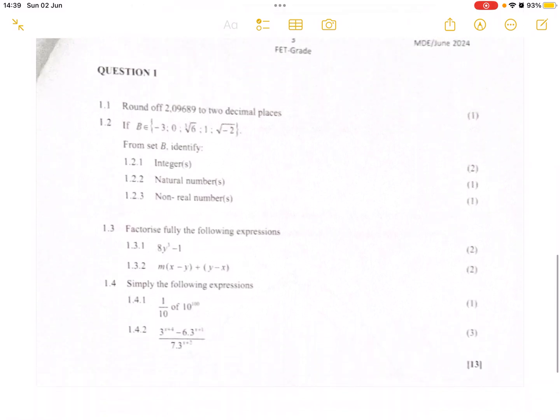In today's episode, we are going to look at the Mpumalanga grade 10 mathematics paper that has been written for June 2024. We're going to be looking at question 1, which is the algebraic expressions part. We did videos on rounding off and number systems previously. Here we are identifying the number system, integers, natural numbers, and non-real numbers, then factorization and also exponents. Let's get right into it.